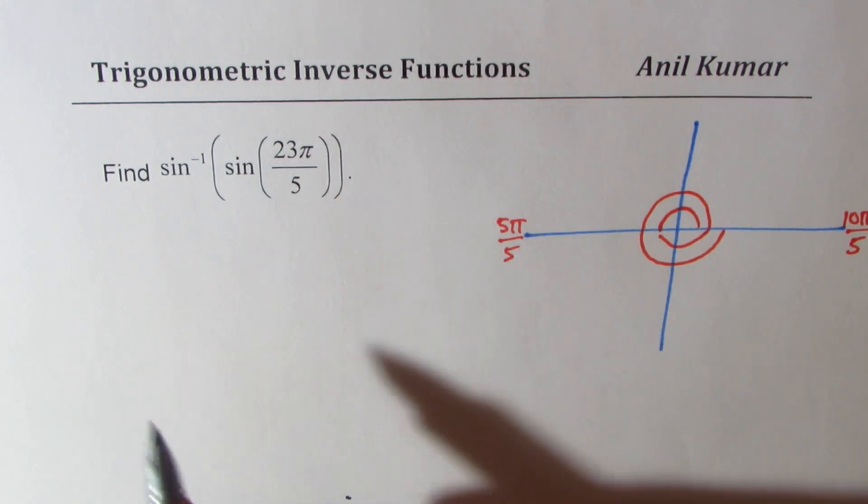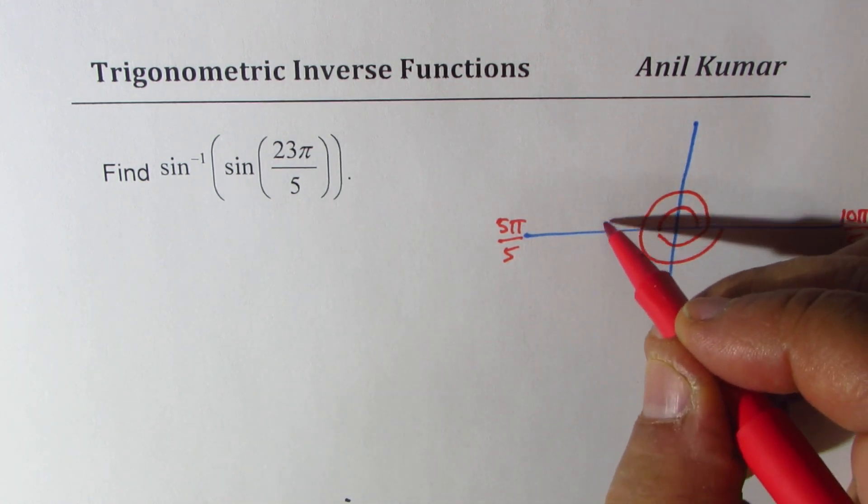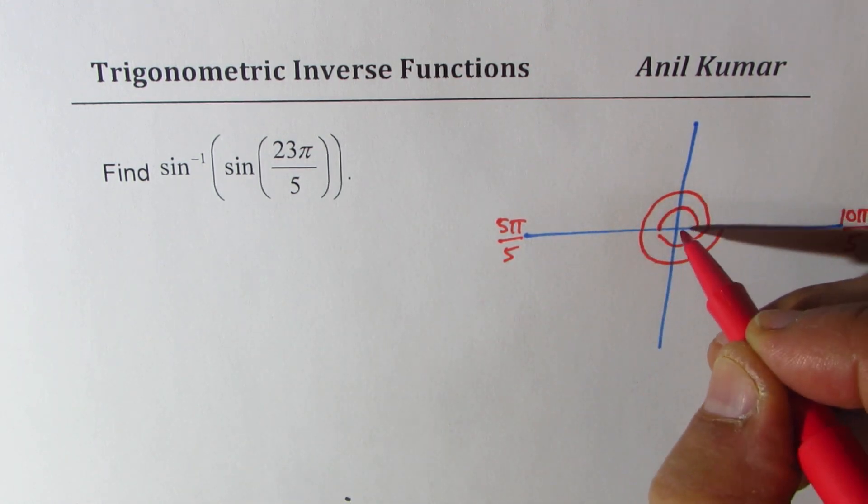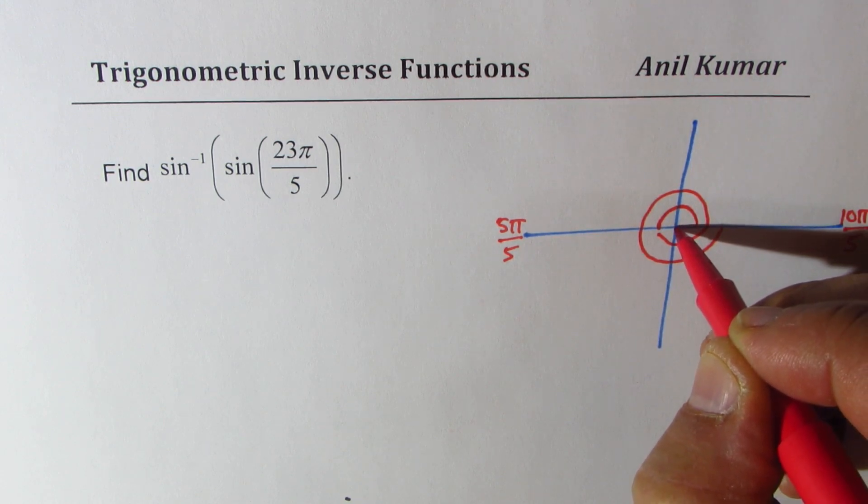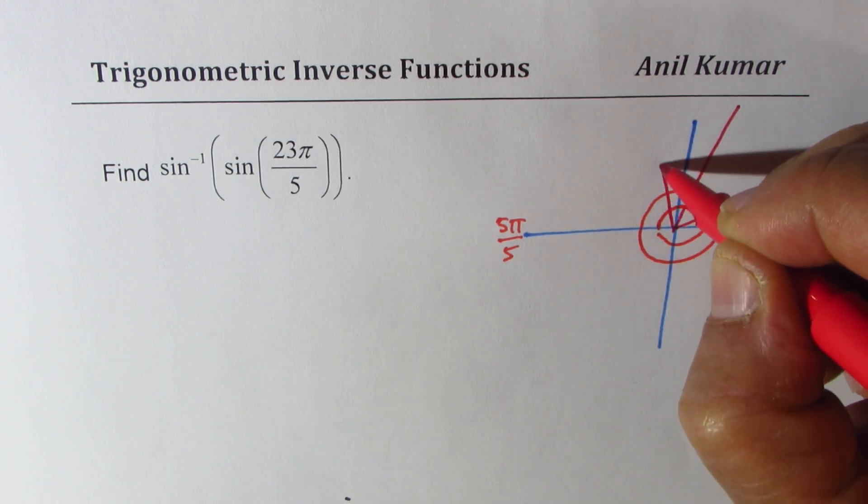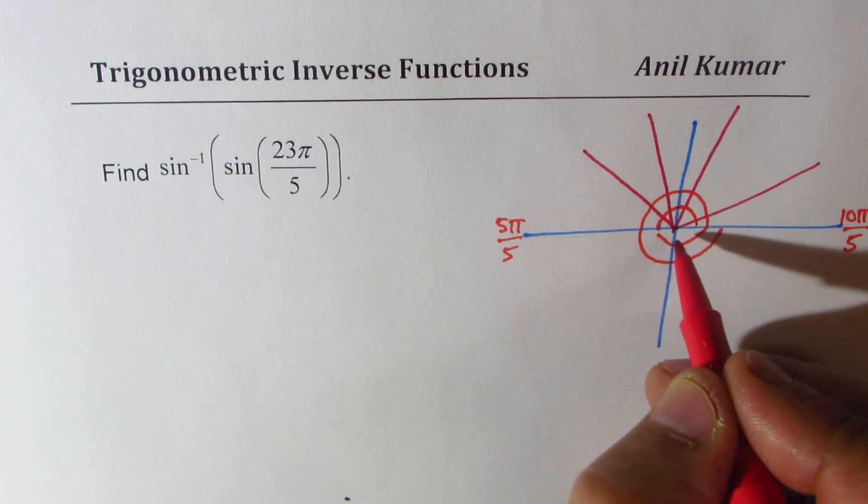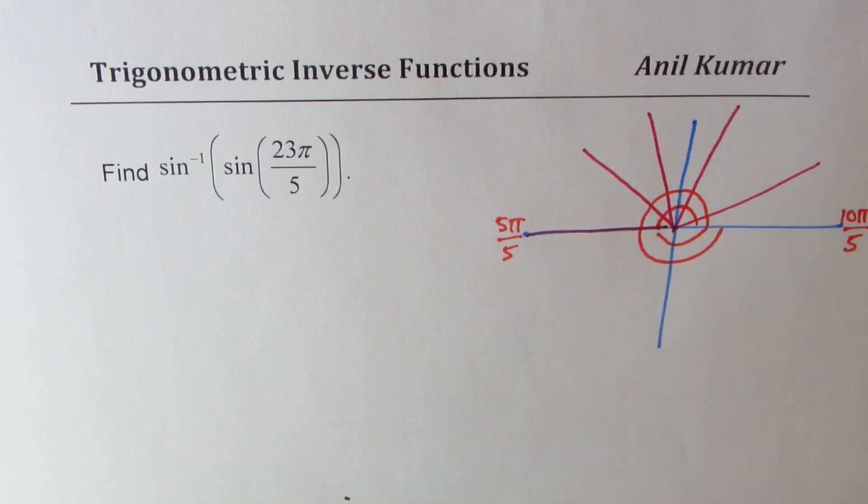And to get to 3, where are you placed? Well, you have to divide this π into 5 equal parts. So it could be done like this, 1, 2, 3, 4, and 5.